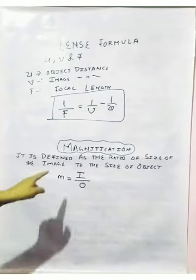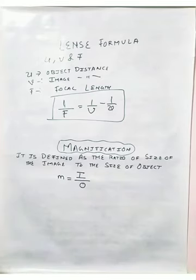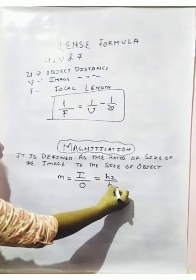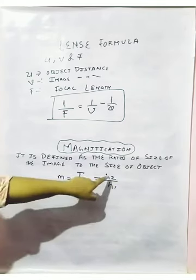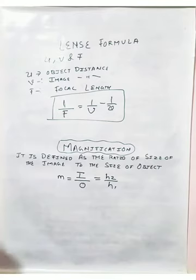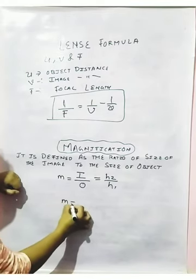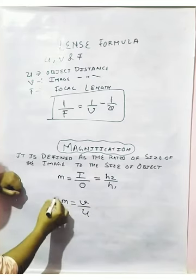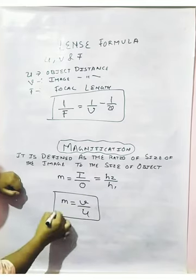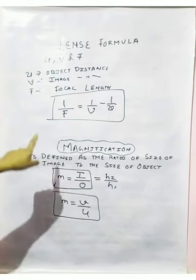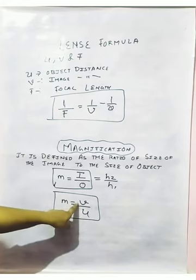The formula is I upon O, or we can say H2 upon H1, where H2 is the height of the image and H1 is the height of the object. The magnification formula is also V upon U. In the case of a lens, magnification is positive V upon U, but in the mirror it is minus V upon U.